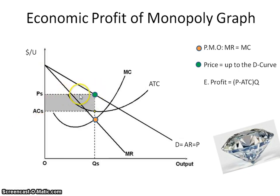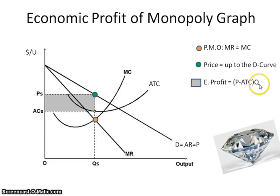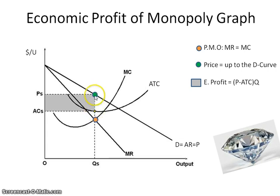When we talk about economic profit, we're looking at the formula: price minus ATC times quantity. We have our price, and then per-unit ATC is this yellow dot here. So price minus ATC times quantity gives you the economic profit.